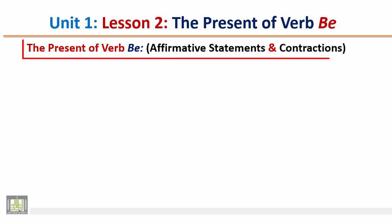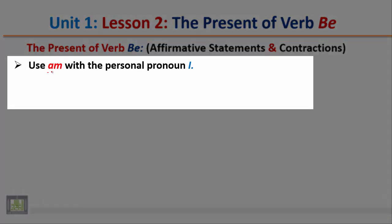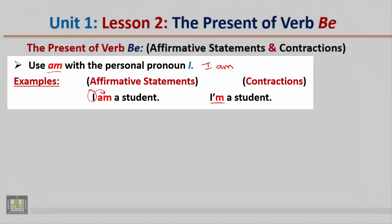The Present of Verb Be: affirmative statements and contractions. Use the verb 'am' with the personal pronoun 'I'. So with the personal pronoun I, we use the verb am. For example: 'I am a student.' The contracted form is 'I'm a student.' Notice that with the pronoun I, we use the verb am.